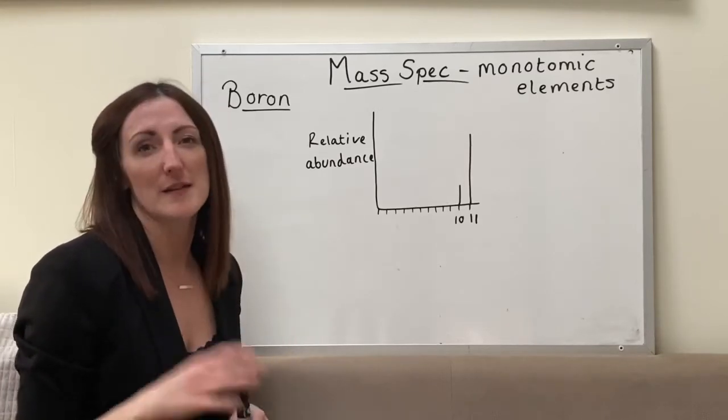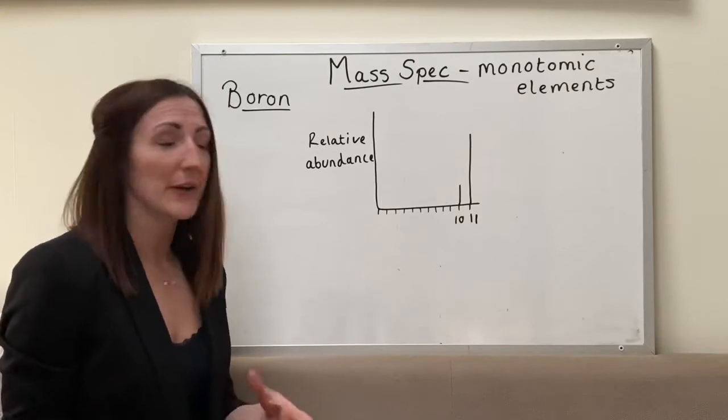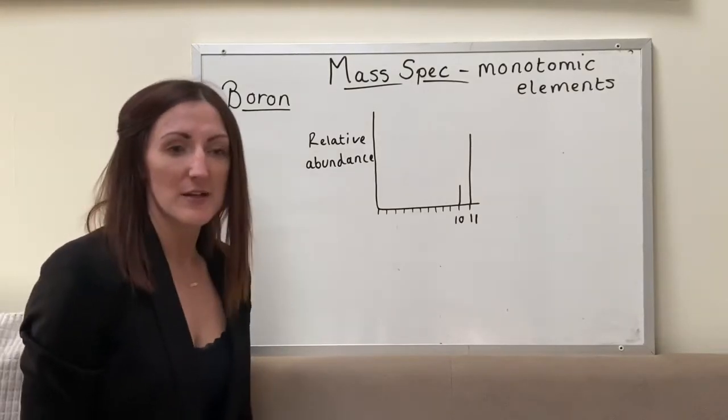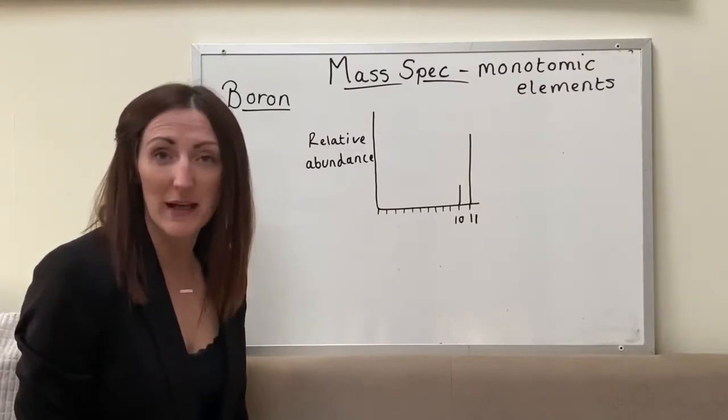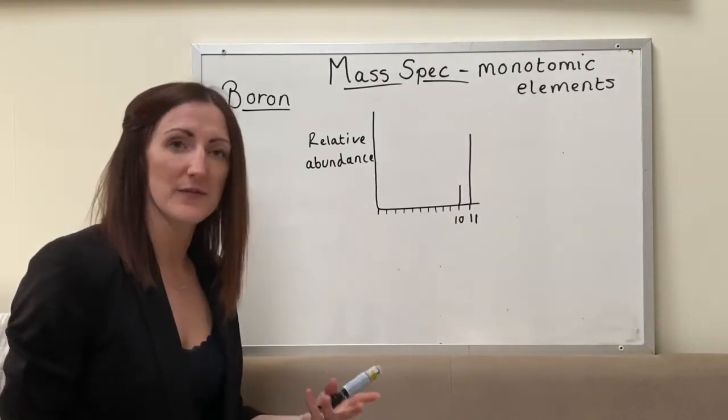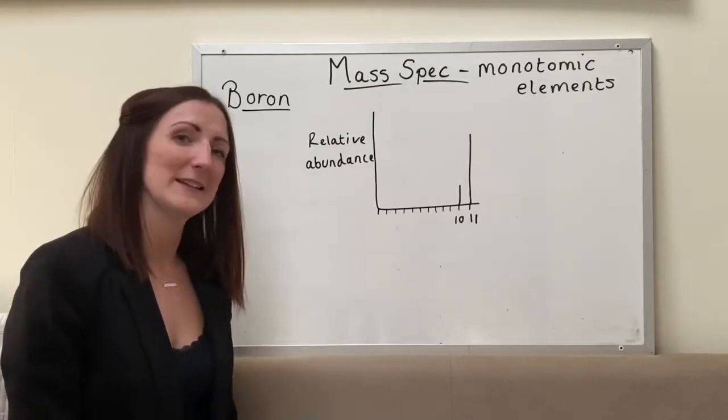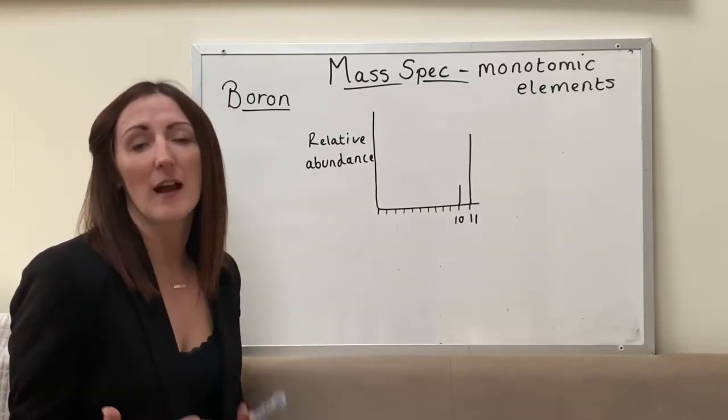Hopefully you're aware that there's isotopes where elements such as boron has an isotope where some of it weighs 10 and some of it happens to weigh 11. You'll know them with chlorine, some of it is 35, some of it weighs 37. Carbon, you've got carbon 12, you've got carbon 13, a lot of them have naturally occurring isotopes.